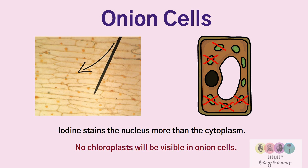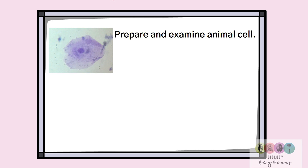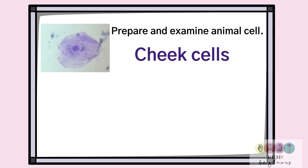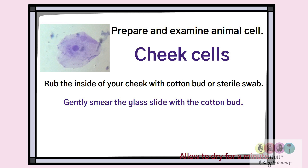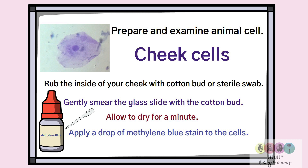Another part of the practical was to prepare and examine animal cells — in this case, we used cheek cells. To get your cheek cells, you rub the inside of your cheek with a cotton bud or a sterile swab. You smear this across the glass slide and allow it to dry for a few minutes so the cells are not washed off. Then apply a drop of methylene blue, which is the stain, to the cells, and lower the cover slip at an angle.